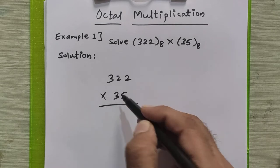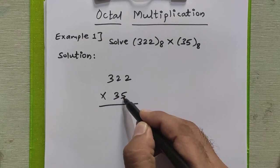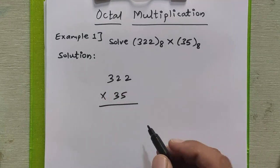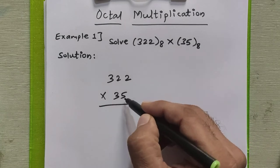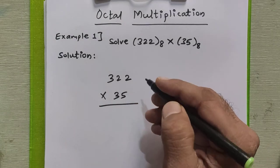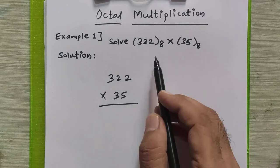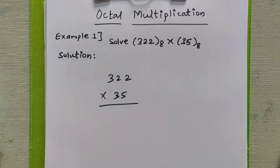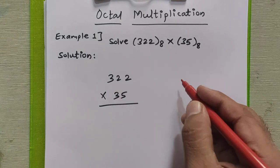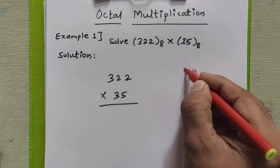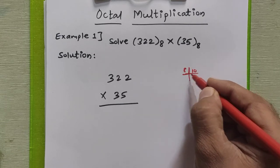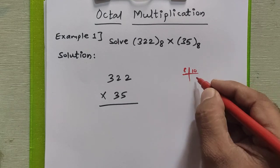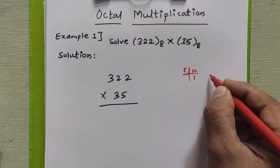We will multiply these octal digits by the first digit, which is 5, and later by 3. The first multiplication is 5 into 2. 5 into 2 is 10 in decimal, but this is octal multiplication, so we need to first convert 10 decimal to octal. To convert 10 decimal to octal, we divide the decimal number successively by 8 and write the remainder. Here the quotient is 1 and remainder is 2.